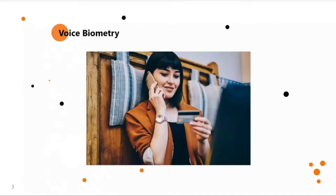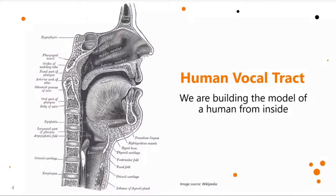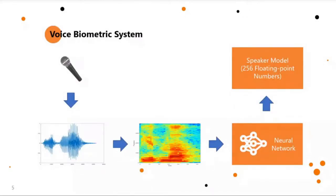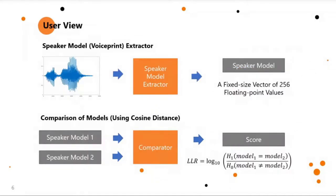In voice biometry, we record human voice and try to build a good model of a human — how their vocal tract, mouth, teeth, and so on look like. This is based on the observation of acoustic pressure. The system starts with audio, we convert it to a spectrogram, and then train a neural network for voice biometry that predicts the speaker model, sometimes called a voice print.